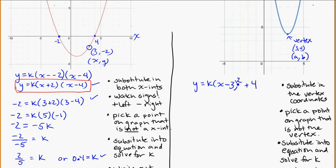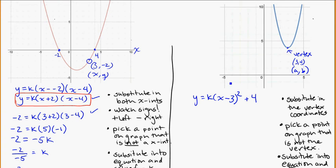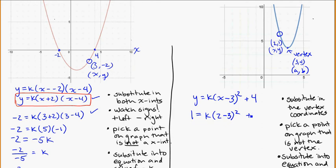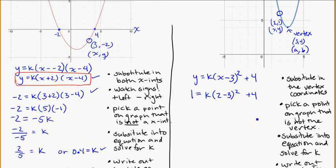Now pick a point on the graph that is not the vertex. You need to find something exactly on the grid, otherwise it won't work. I can see a point that appears to be exactly on the grid lines at over 2 and up 1, so I'll use the point (2, 1). Substituting into the equation: y becomes 1, and x becomes 2, giving 1 = k times (2 minus 3) squared plus 4.